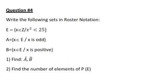In question number 4, we have E, A, and B. And we need to write the following sets in roster notation or in extension. So the first one, X belongs to Z, such that the squaring of this number is less than 25. You know that Z is the set of integers, and integers could be negative or positive numbers. So E is minus 4, minus 3, minus 2, minus 1, 0, 1, 2, 3, 4.